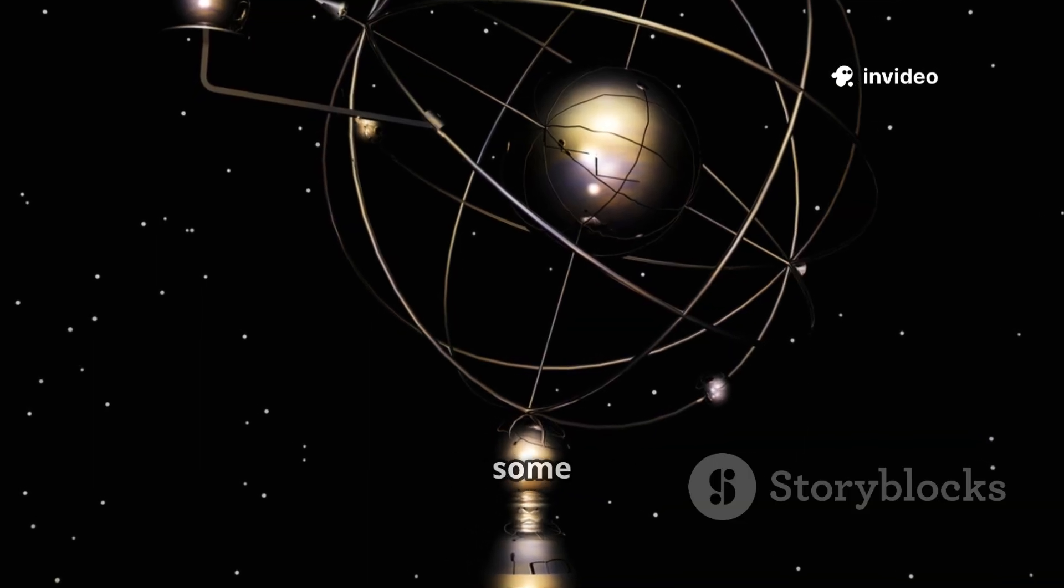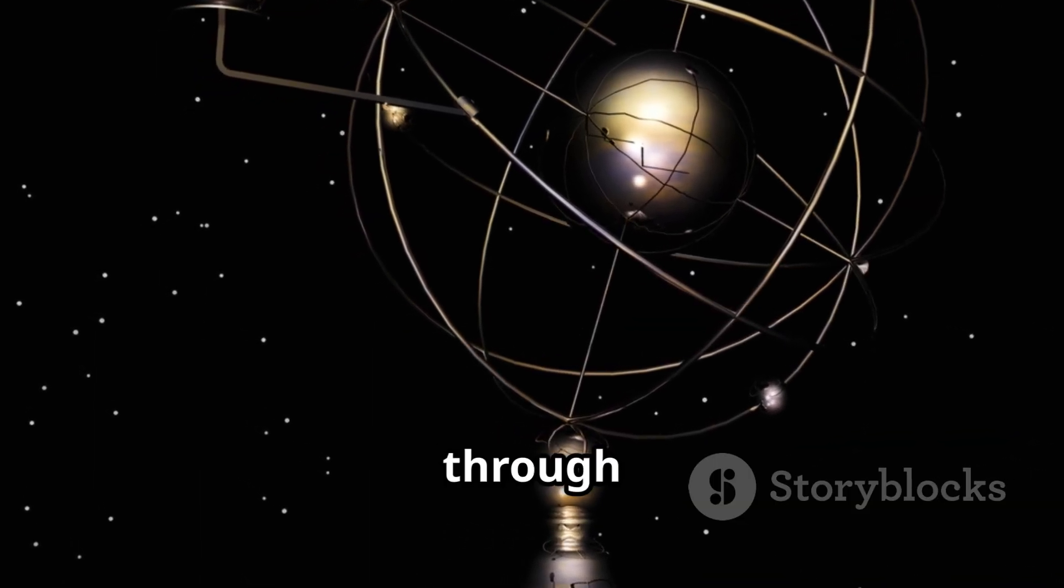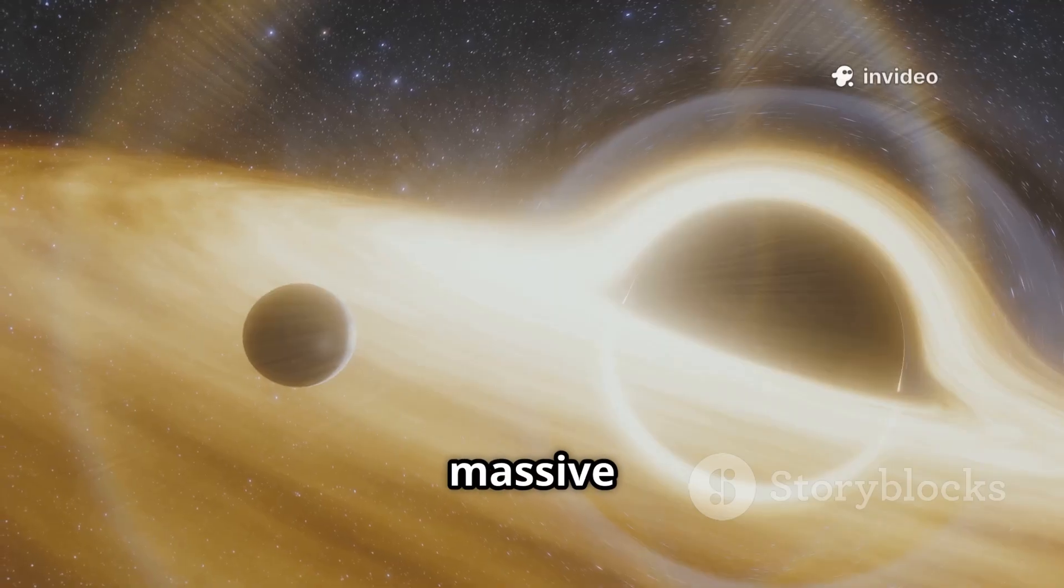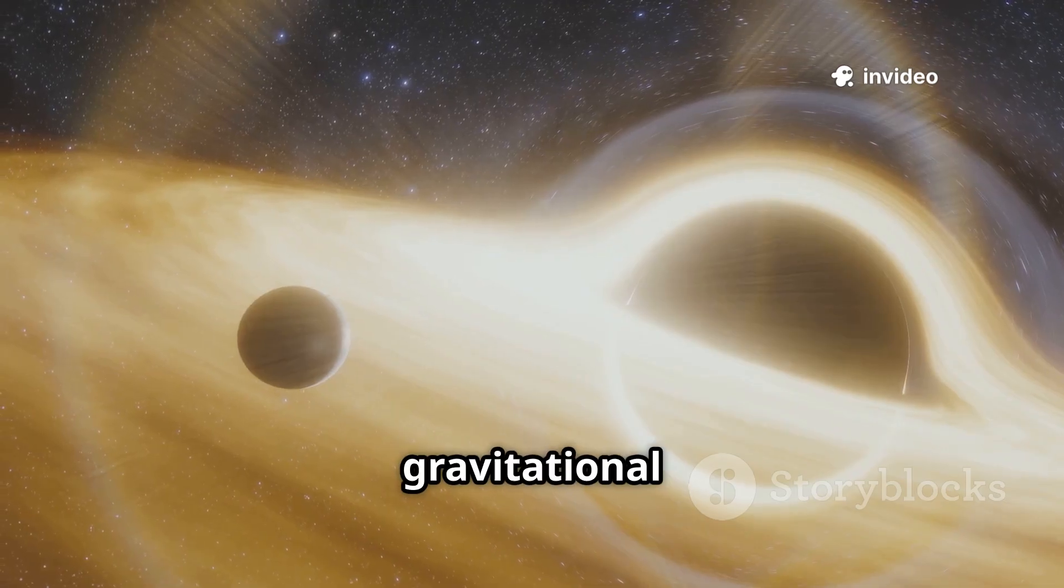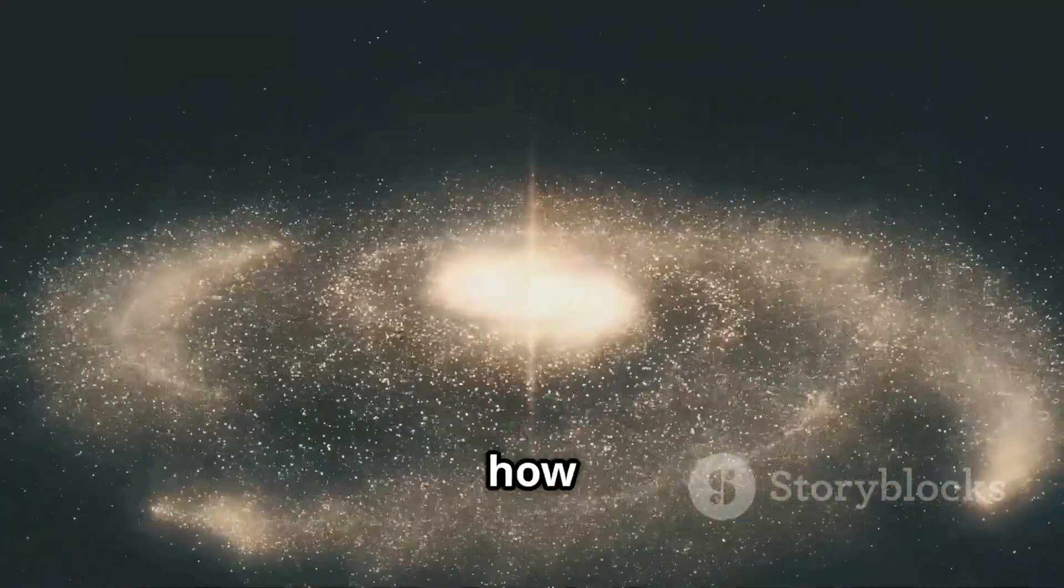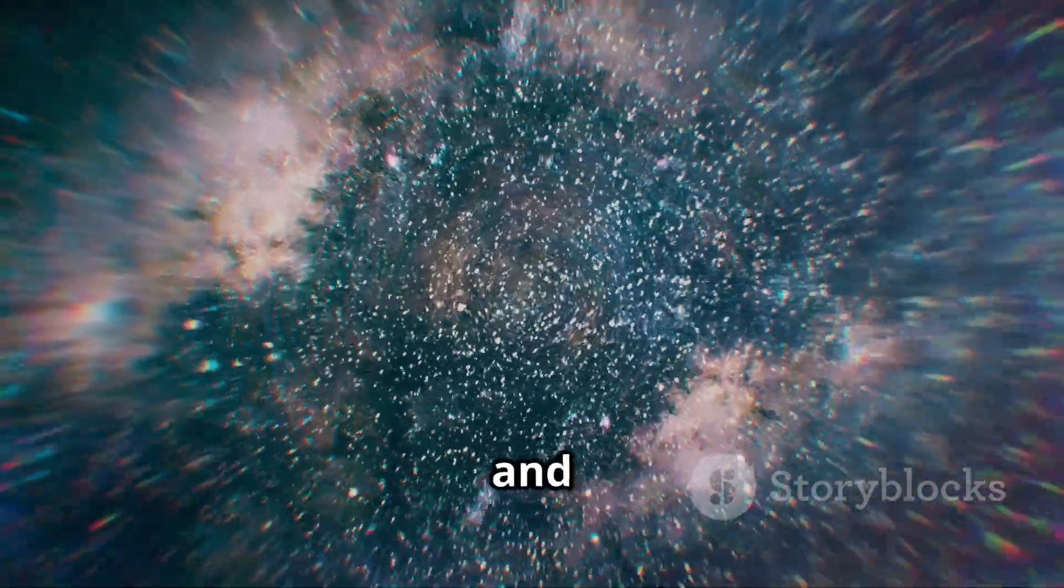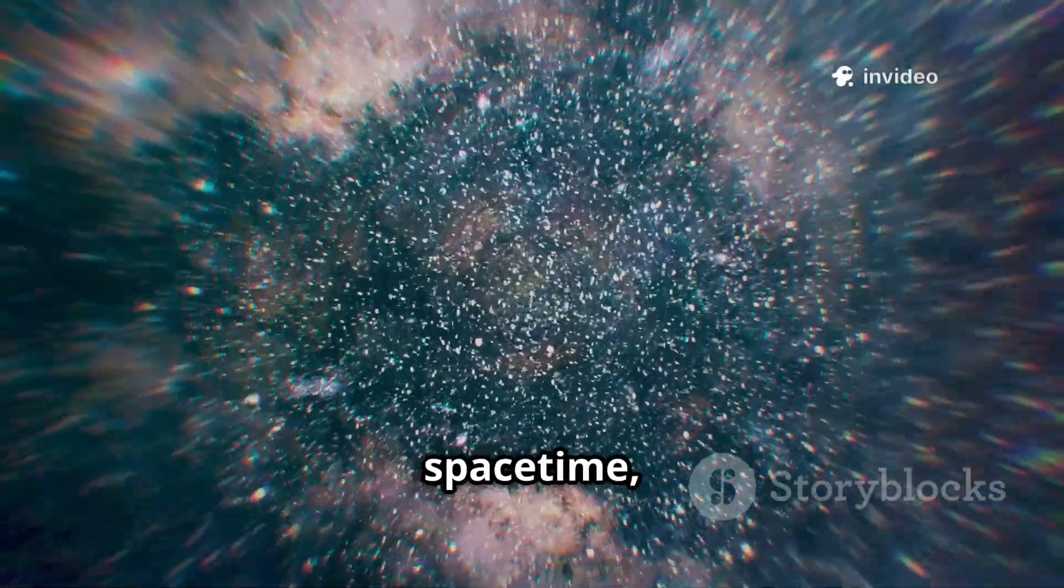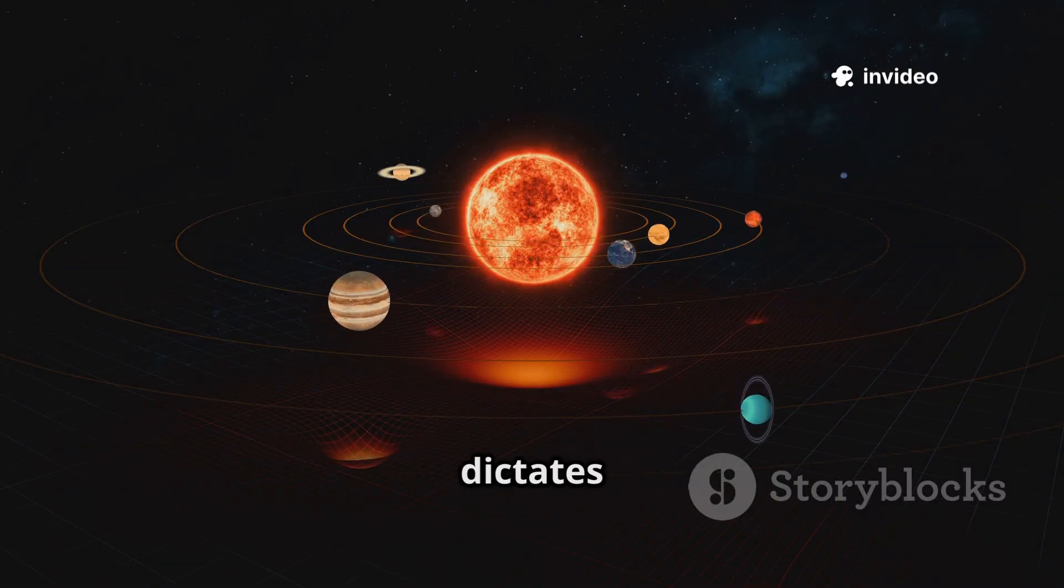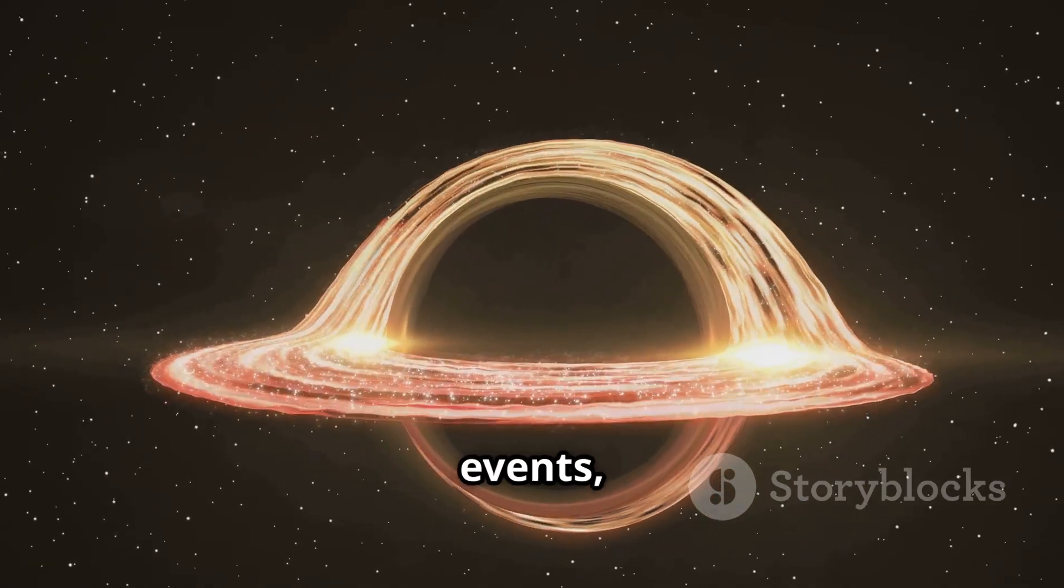Planets orbit the Sun not because of some magical pull, but because they are following the straightest path possible through the curved space-time created by the Sun's huge mass and energy. The more massive the object, the deeper the gravitational well it creates. So the rules of the cosmic dance are set by how mass and energy are spread out. Every star, every planet and every galaxy leaves its mark on the fabric of space-time, telling it how to curve. And in return, that curved space-time dictates how everything else moves. This elegant back and forth rules the biggest cosmic events.